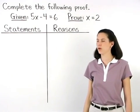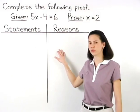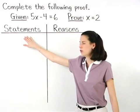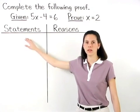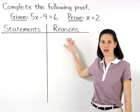To set up this proof, we start with a two-column chart. On the left side of the chart, we have our statements, and on the right side, we have our reasons.